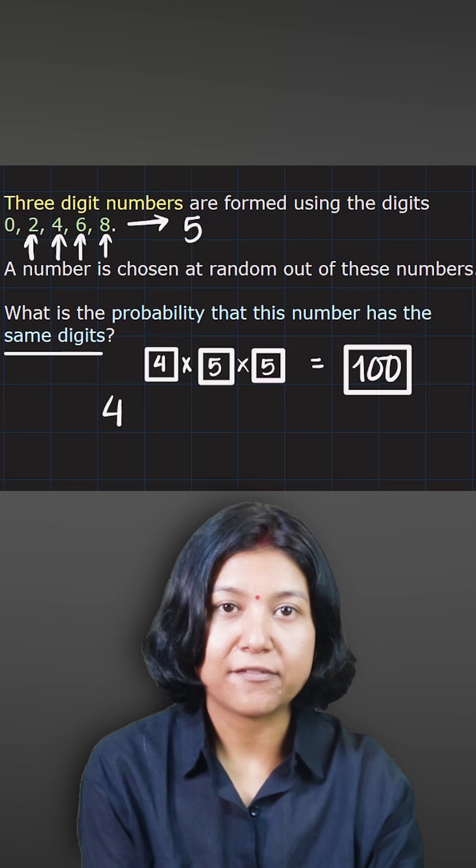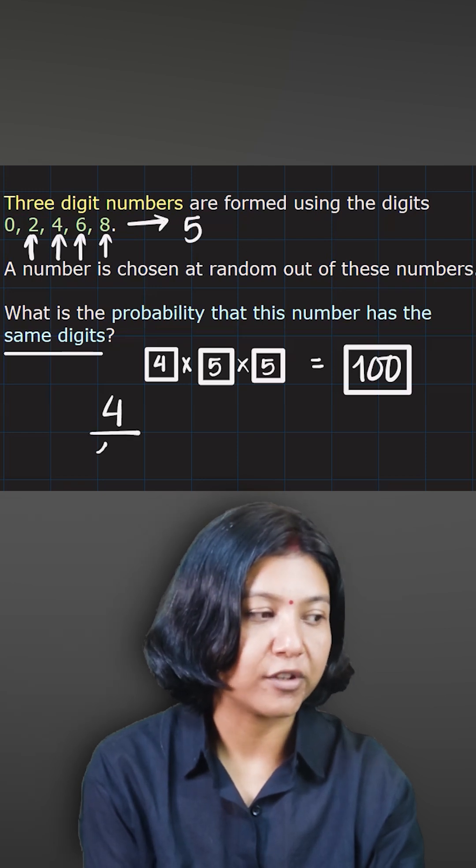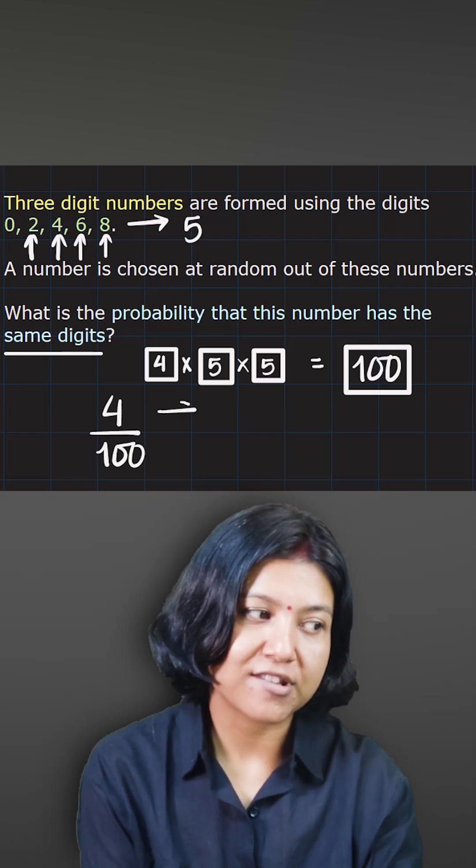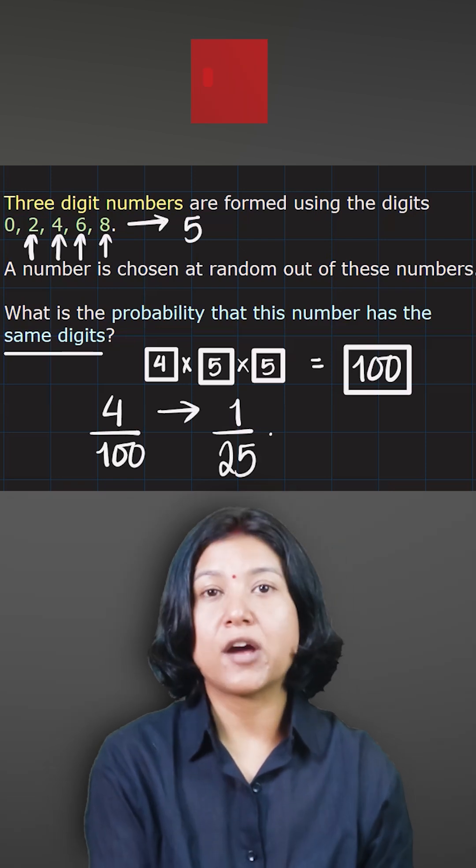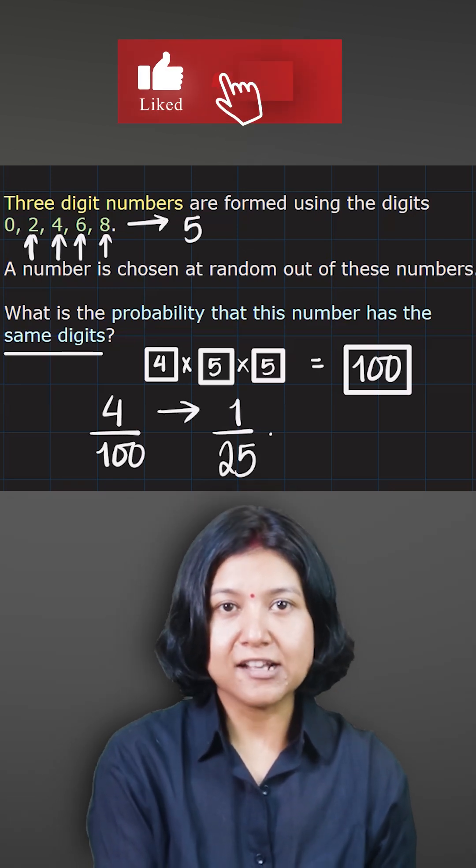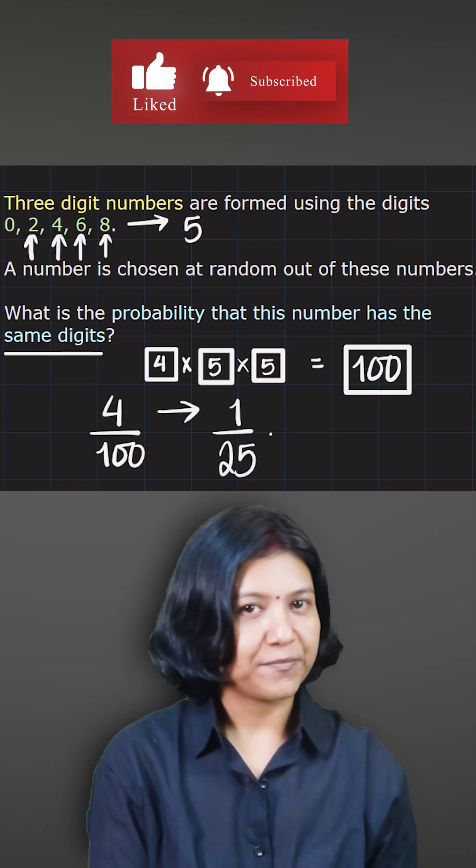So the probability is simply found by taking 4 out of the total 100. The answer is 1/25. Hence, you have 1 out of 25 chances that the number picked has the same digits.